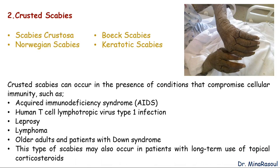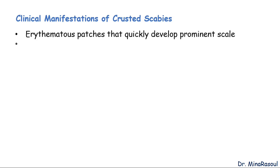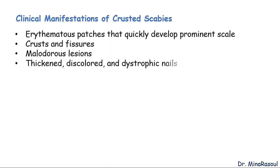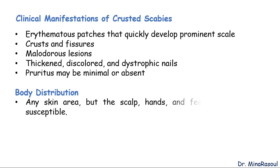This type of scabies may also occur in patients with long-term use of topical corticosteroids. Clinical manifestations of crusted scabies include erythematous patches that quickly develop prominent scale crusts and fissures, malodorous lesions, thickened, discolored, and dystrophic nails. Unlike classic scabies, pruritus may be minimal or absent in this form. While any skin area can be affected, the scalp, hands, and feet are especially susceptible.